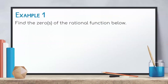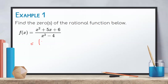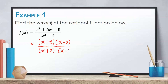Let us have an example. Find the zero of the rational function: f(x) = (x² + 5x + 6) / (x² - 4). First, let us factor the numerator and the denominator. The factors of x² + 5x + 6 are (x + 2)(x + 3), and the factors of x² - 4 are (x + 2)(x - 2).